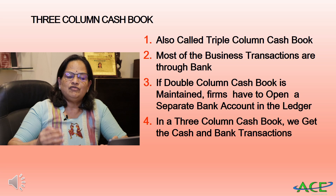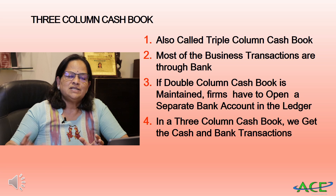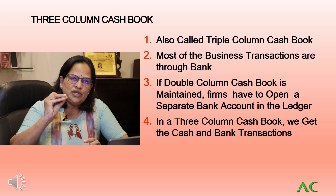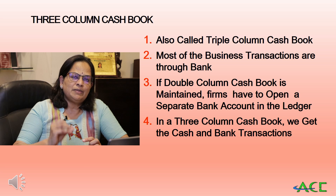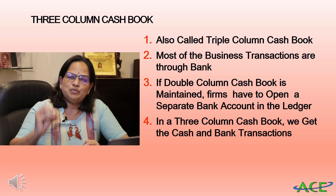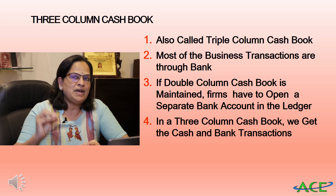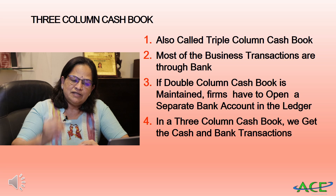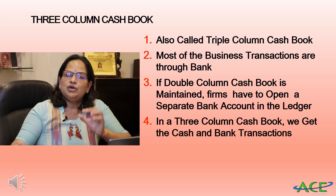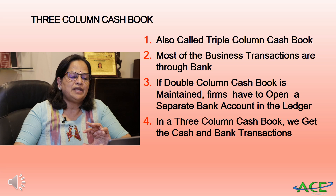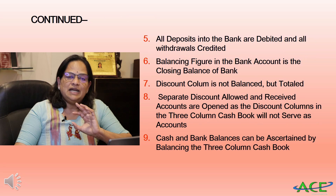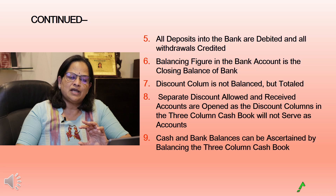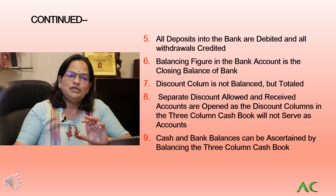In single column and double column cash books, the firm has to open a separate bank account. In case of single column and double column cash books, we have to prepare a separate bank account, which I will explain with the journal entry. Whereas in three column cash book, we don't have to prepare separate bank and cash ledger accounts — we can get the balance by balancing the accounts, which we will prove with an example.